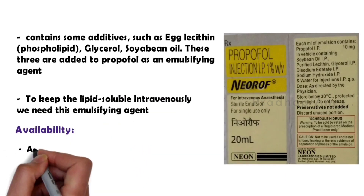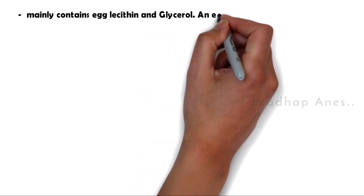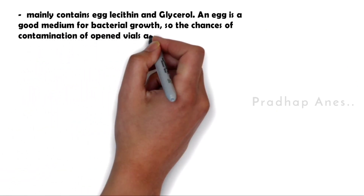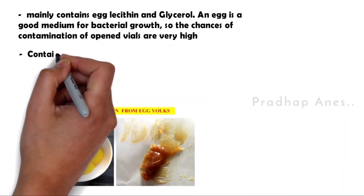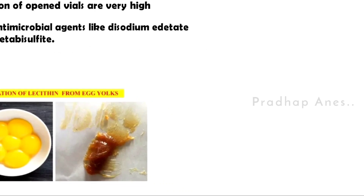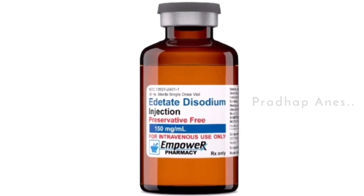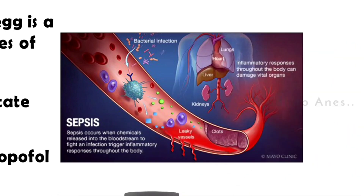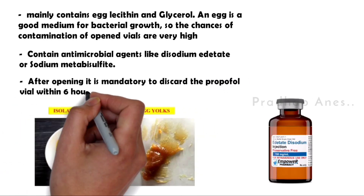Propofol is available in 1% and 2% solutions. It mainly contains lecithin and glycerol. Since egg is a good medium for bacterial growth, the chances of contamination of open vials are very high. Although recent formulations contain antimicrobial agents like disodium edetate or sodium metabisulfite, they don't guarantee immunity against contamination. If propofol is infected by bacteria, entering into blood vessels can cause septicemia. Therefore, after opening, it is mandatory to discard the propofol vial within 6 hours.